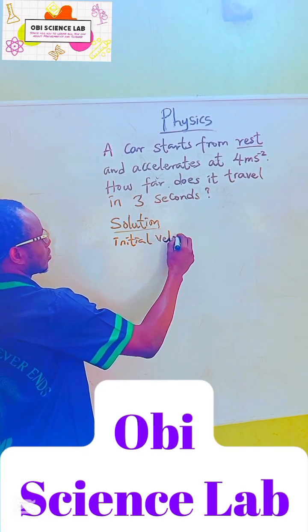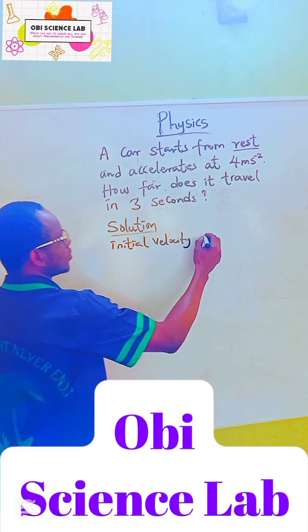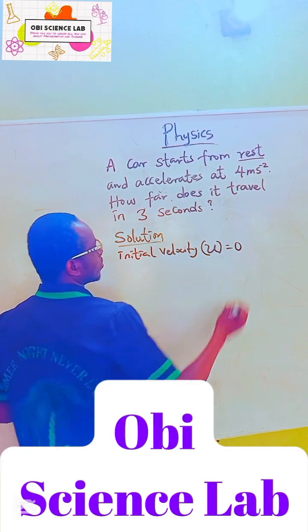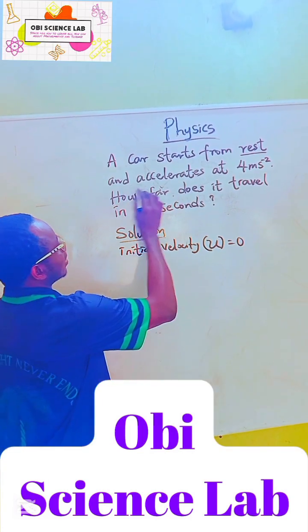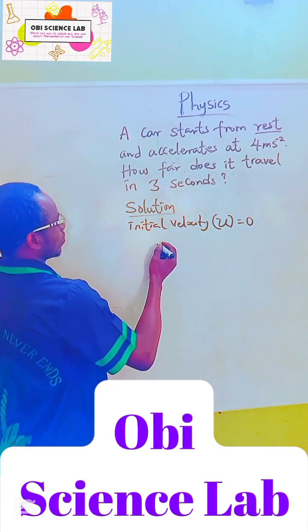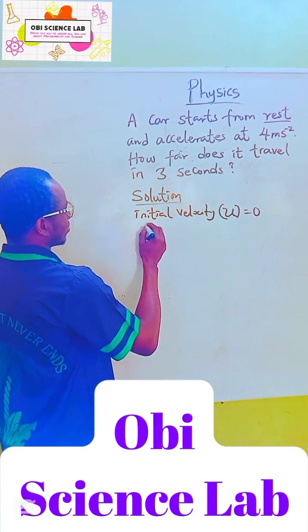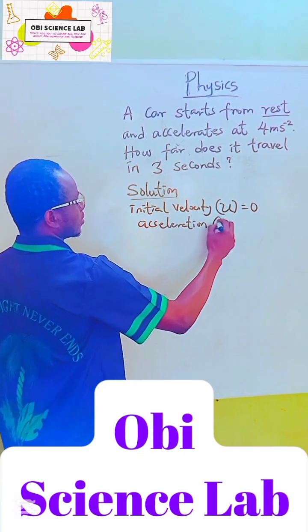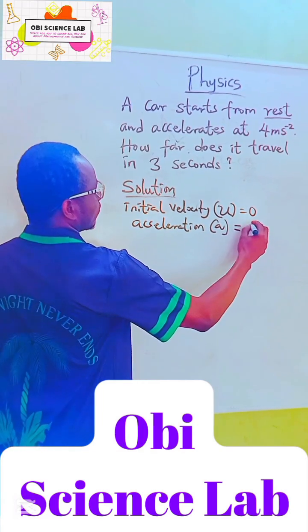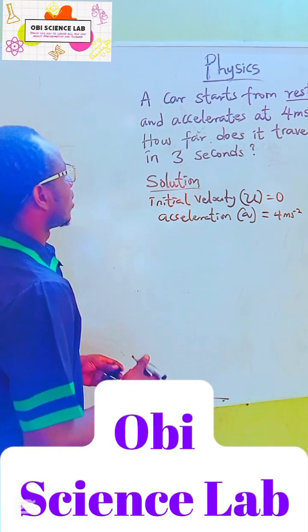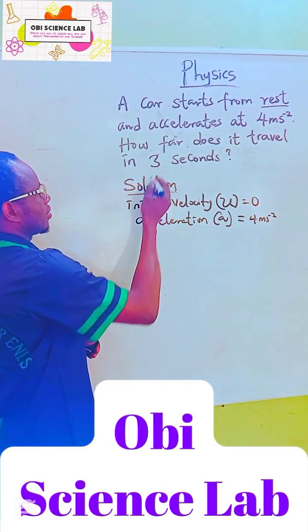Initial velocity, which is u, is equal to zero. And it accelerates at this pace, four meters per second squared. That means acceleration, which is a, is equal to four meters per second squared. And we are given time as well, three seconds.